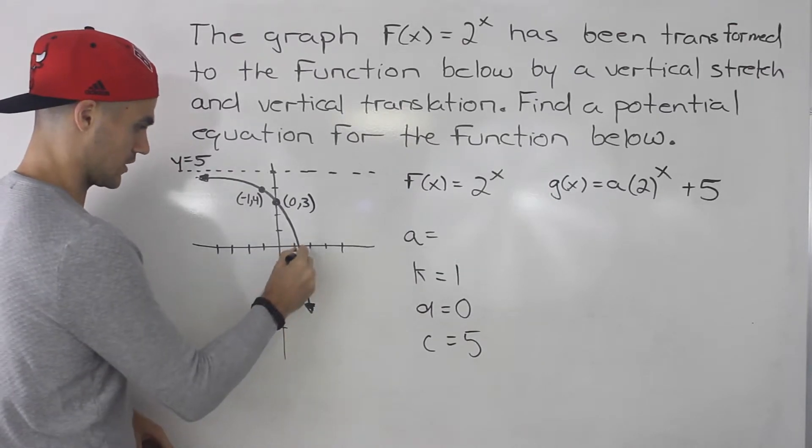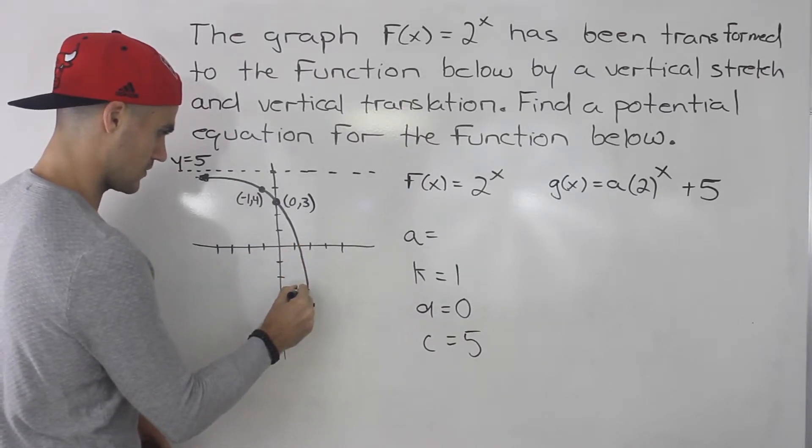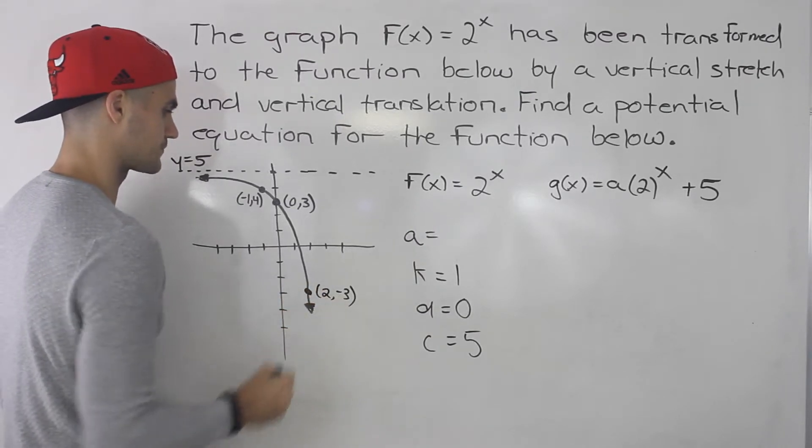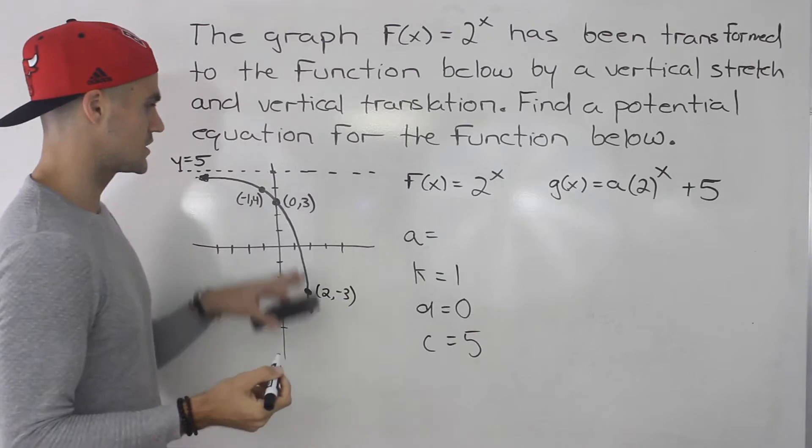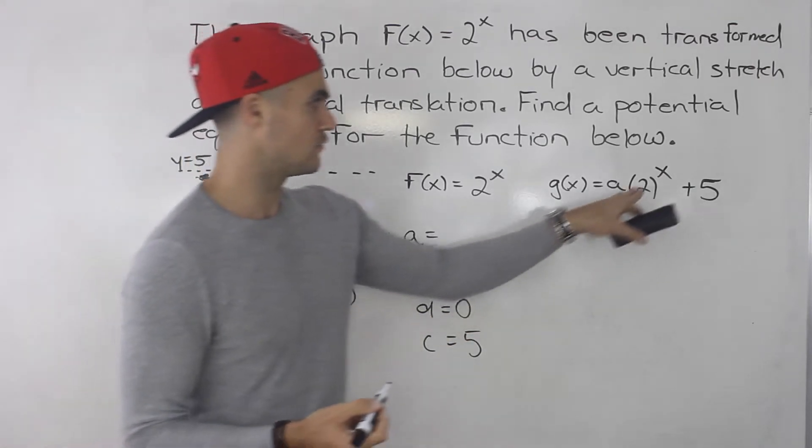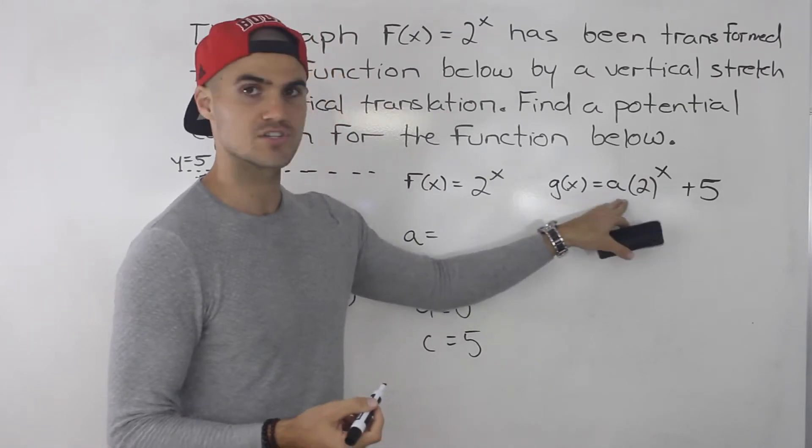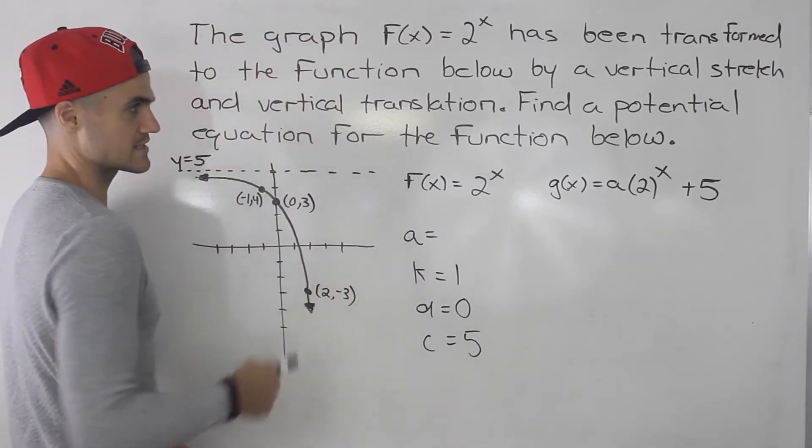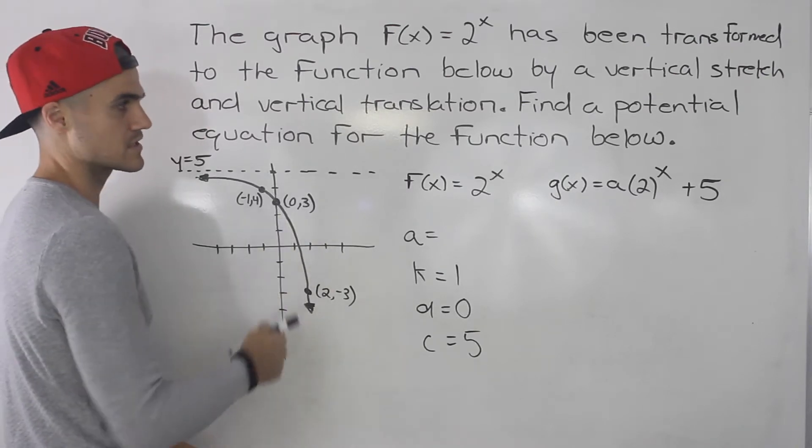Is there any other points? Well, maybe over here, (2, -3). That can work as well. So what you can do is you could take any of these points here and then plug them in for x and y, and then you could solve for that a value. So let's pick (0, 3). I feel like that's the easiest one to do because that x value is going to be 0.